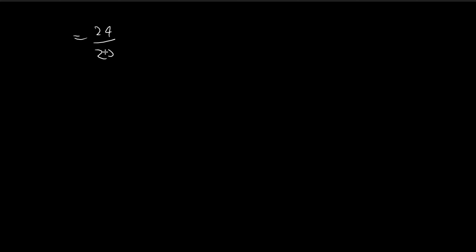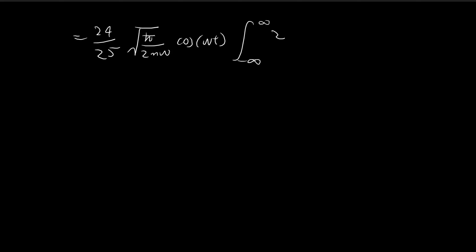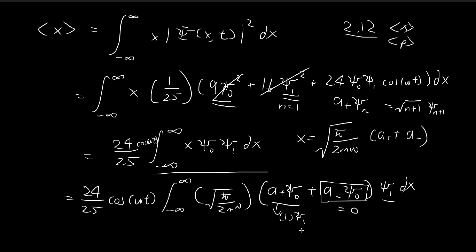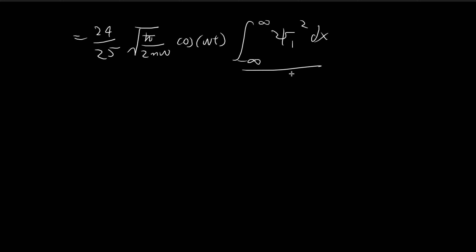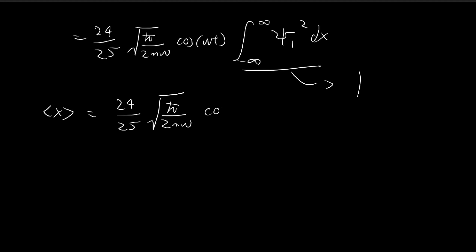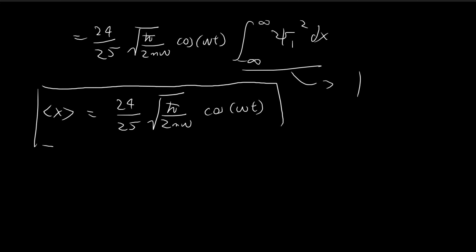Combined with the constants, we get all these constants, a square root factor, cosine ωt, and then the integral from negative infinity to infinity of ξ₁ squared dx. This integral equals 1 because ξ₁ is normalized. So the expected value of x is equal to (24/25) × √(ℏ / 2mω) × cos(ωt).